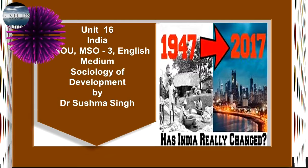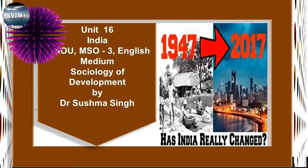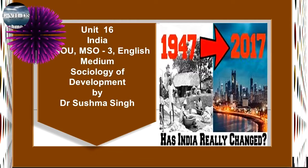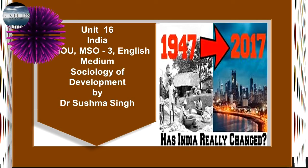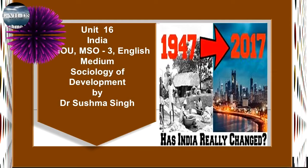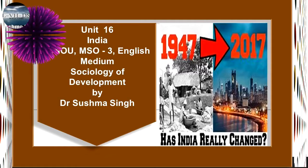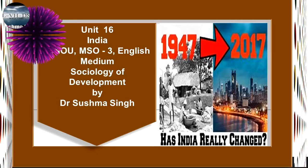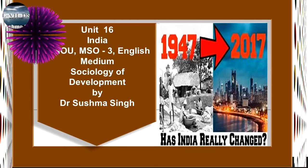The first plan accorded the highest priority to agriculture, with special emphasis on rural reconstruction programs and land reforms, including initiation of various irrigation and power projects. About 44.6% of the total outlay of Rs. 2,069 crore was allotted for its development. The plan projected that savings and investment as a proportion of national income would rise from an estimated 5–6% in the early 1950s to 20% by 1968–69, and stabilize at that level thereafter. Aggregate income was expected to double in approximately 20 years, and per capita income in 27 years.